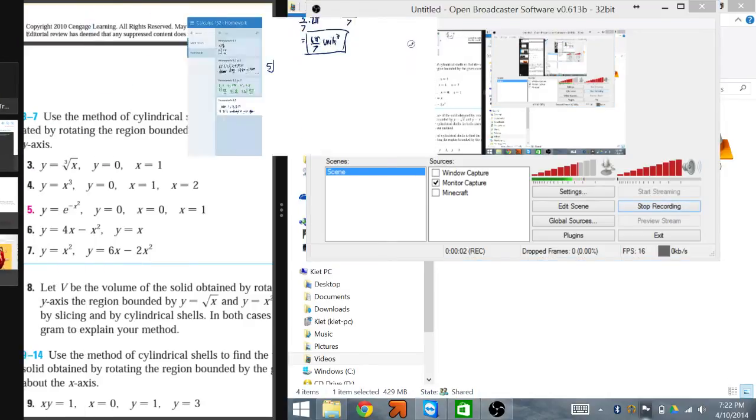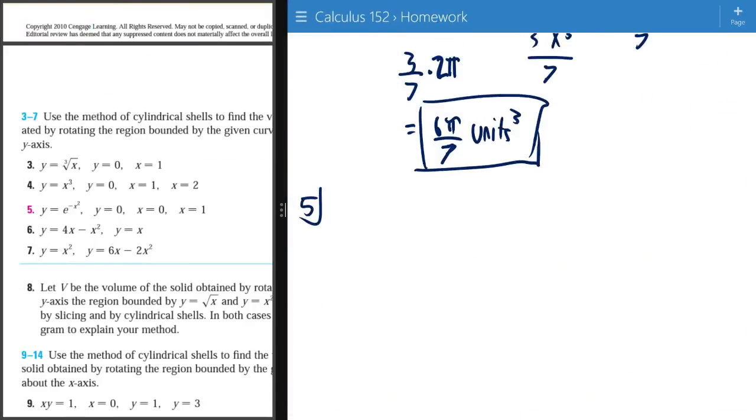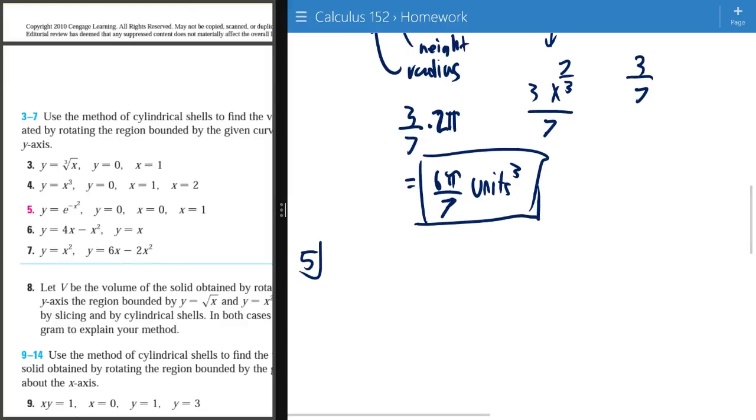Alright, hello guys. My name is Kit and in this video I am going to do number 6.35 from the James Stewart book for calculus.